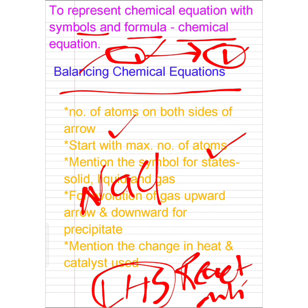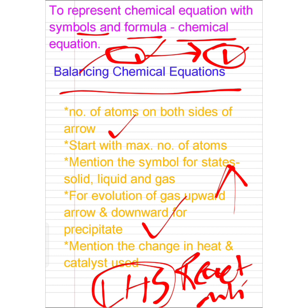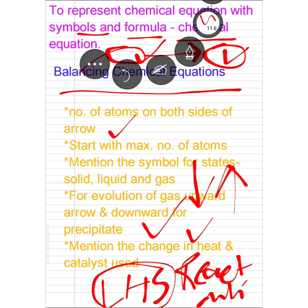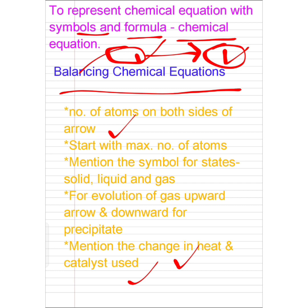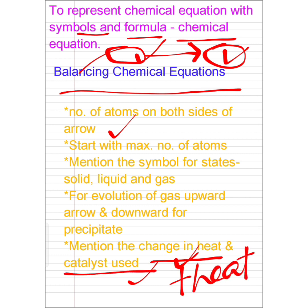Fourth point: for evolution of gas we use an upward arrow, and for precipitation we use a downward arrow. Fifth point: mention the change in heat and catalyst used. Whenever a heat change is occurring, as discussed in the change in temperature topic in the previous video, we write plus heat. The catalyst used will be discussed while solving the chemical equations.